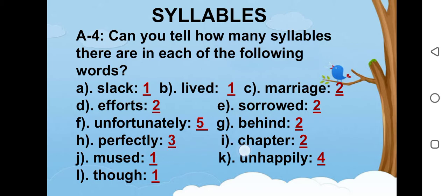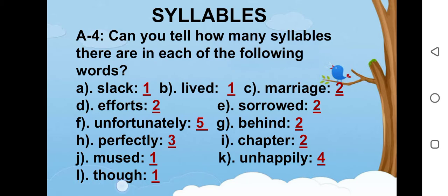I is chapter. This word has two syllables. J is mused. This word is having one syllable. K is unhappily. This word has four syllables. L is do. This word has only one syllable.